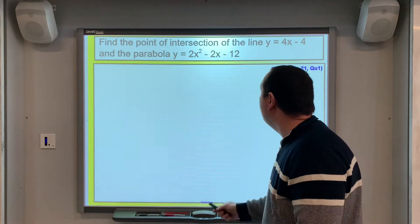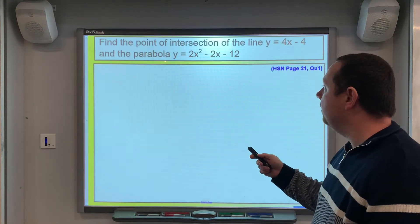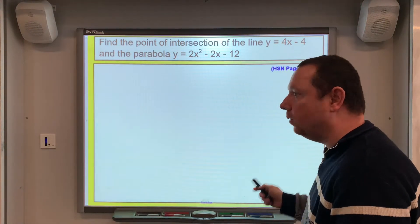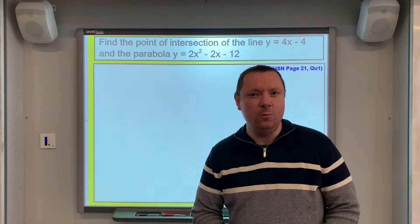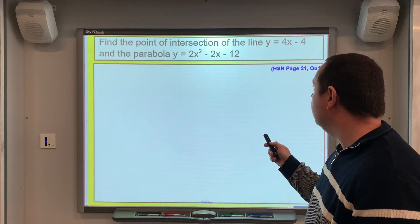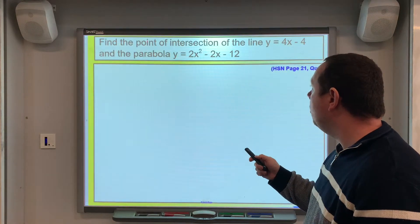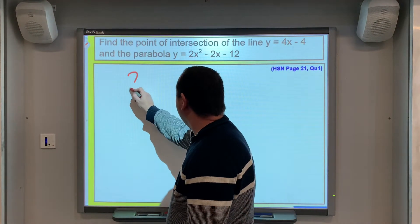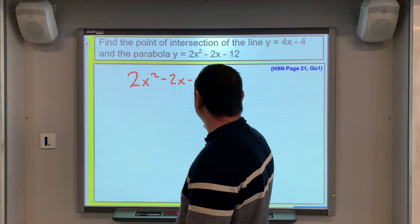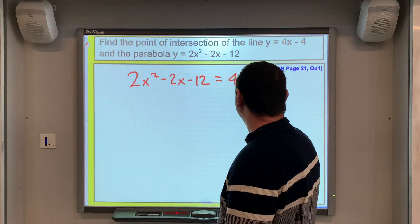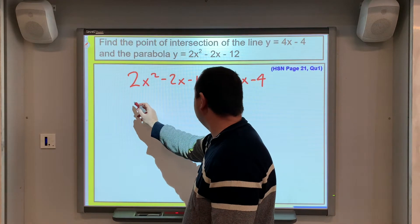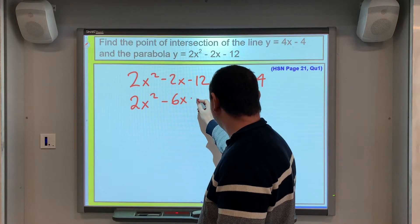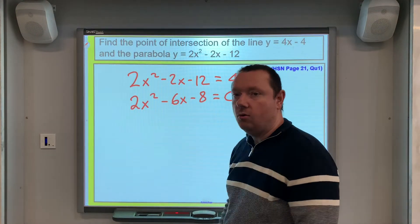Key point: if you see intersection of curves or lines, you're going to be solving simultaneous equations. A basic example to start with: we've got y equals 4x minus 4 and the parabola y equals 2x squared minus 2x minus 12. Since they're both y equals and we want to know the point of intersection, we can make the equations equal to each other: 2x² − 2x − 12 = 4x − 4. Moving everything to the left-hand side gives 2x² − 6x − 8 = 0.